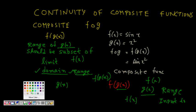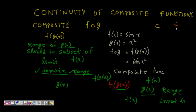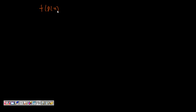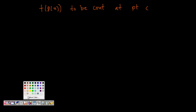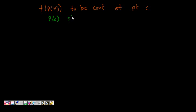Because whatever values come out from g must belong to the domain of f of x, then only f of g of x will be defined. Next, at a given point c, we check whether f of g of x is continuous. For f of g of x to be continuous at c, first g of x should be continuous at c.